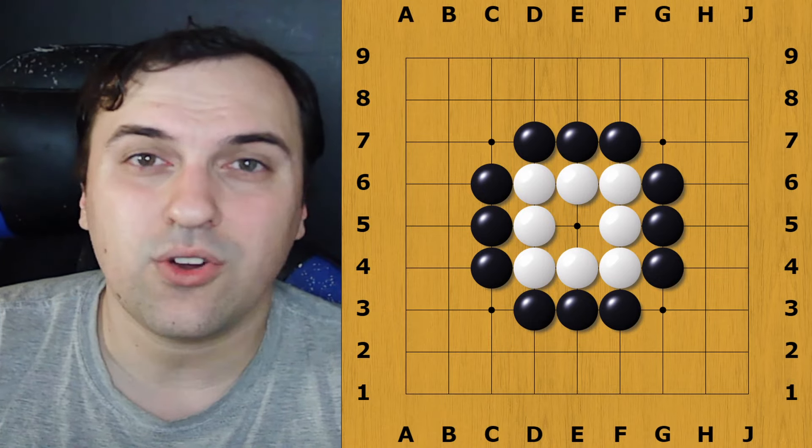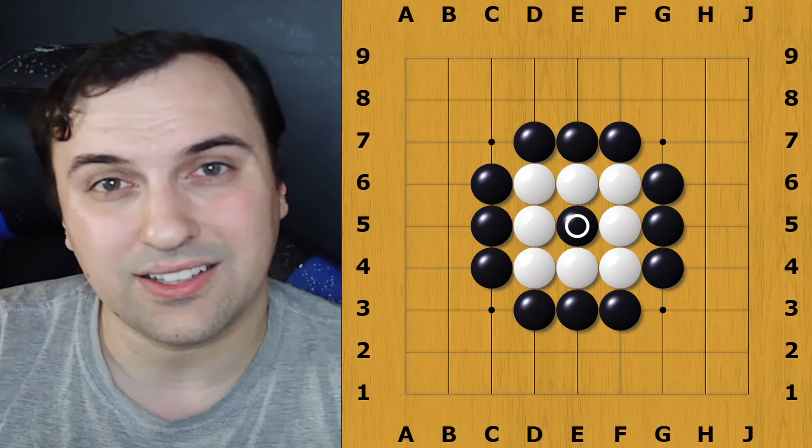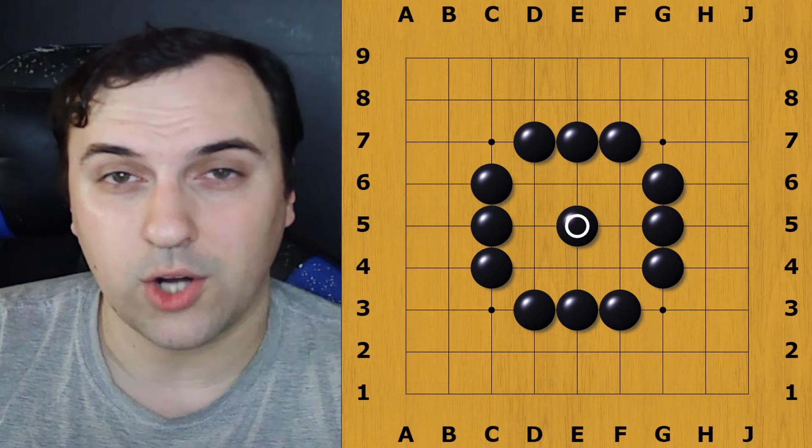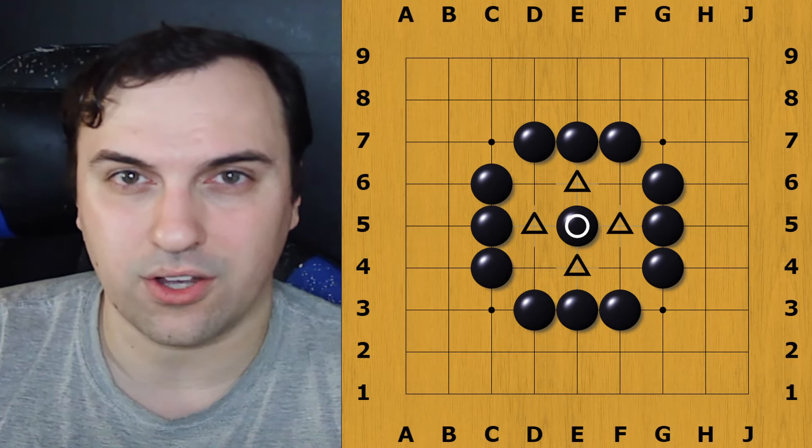The exception to this rule is when you are capturing something. When a move takes the last Liberty of the other color's group, then the stone or stones are removed from the board and the newly placed stone will now have liberties.